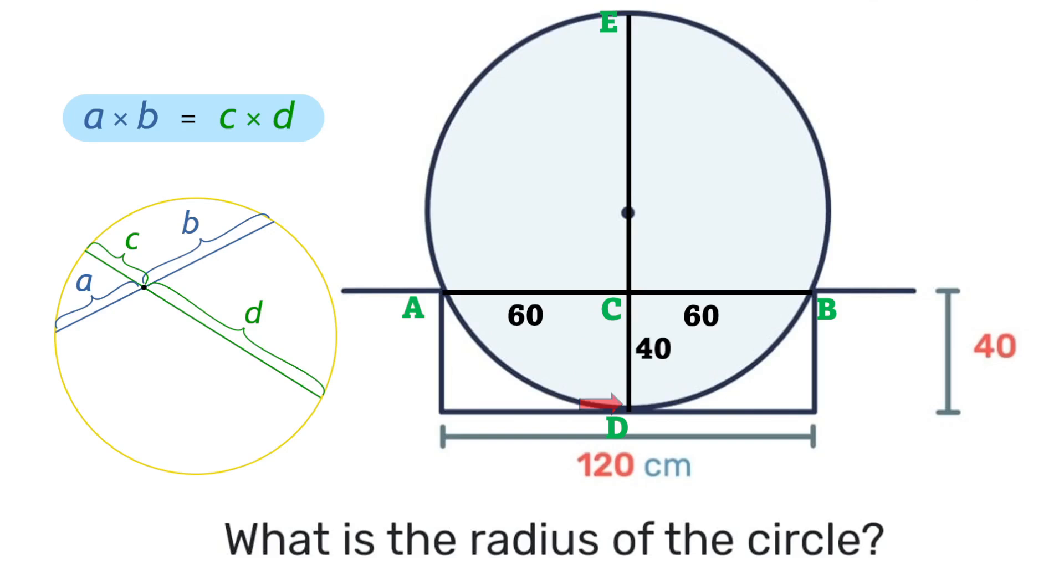So when we look at the line segment EC, we'll notice that that line segment EC will be the diameter, which is two times the radius, minus the line segment CD. So we can say that it is equal to 2R minus 40.